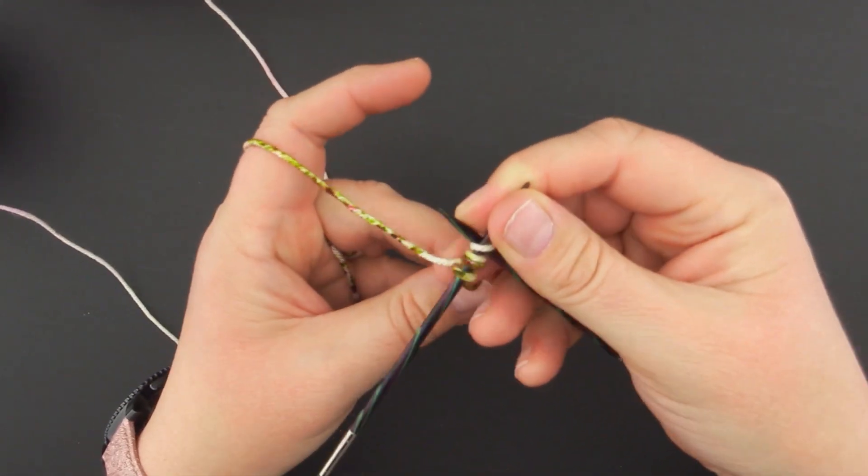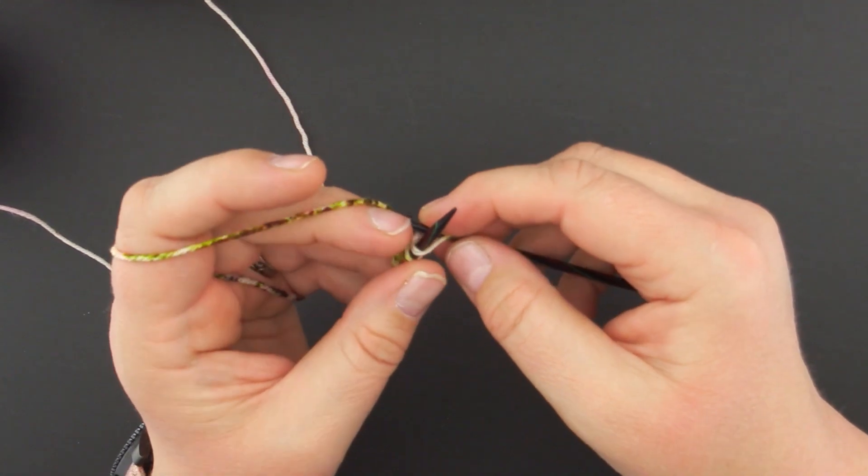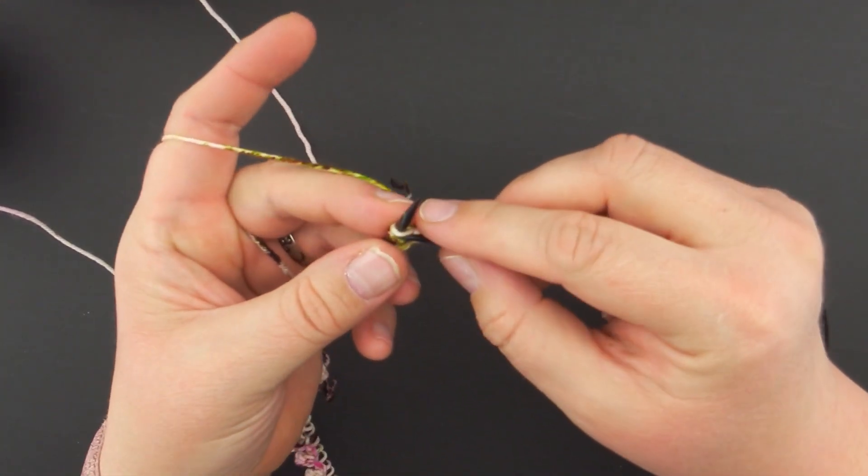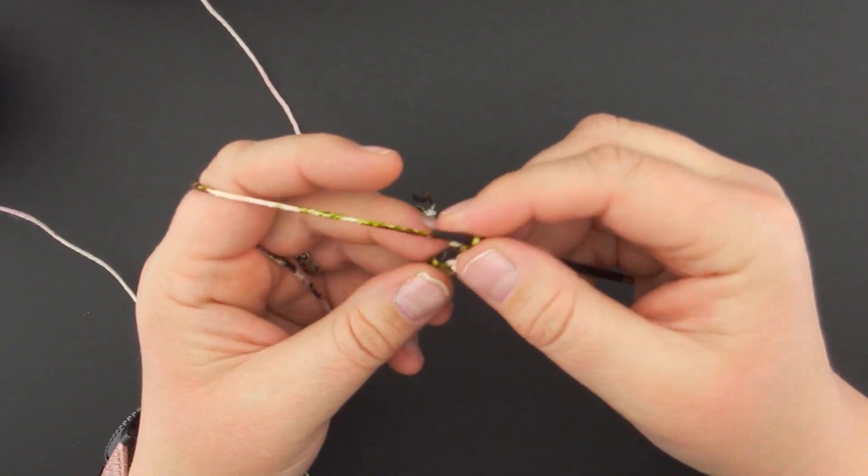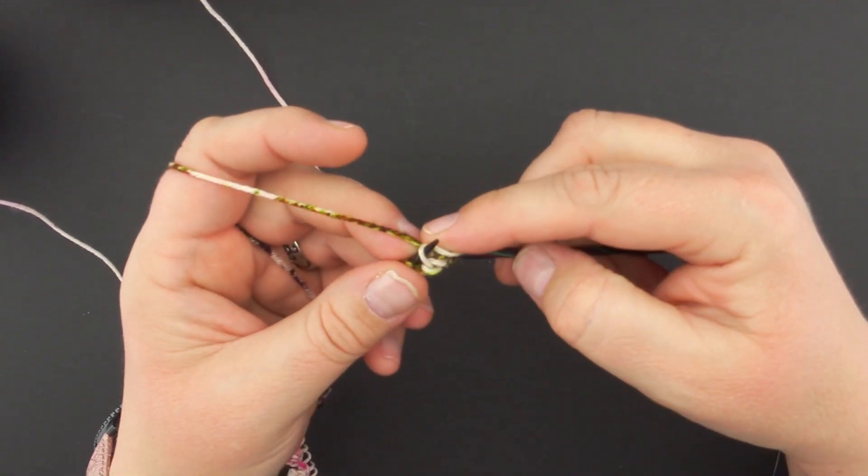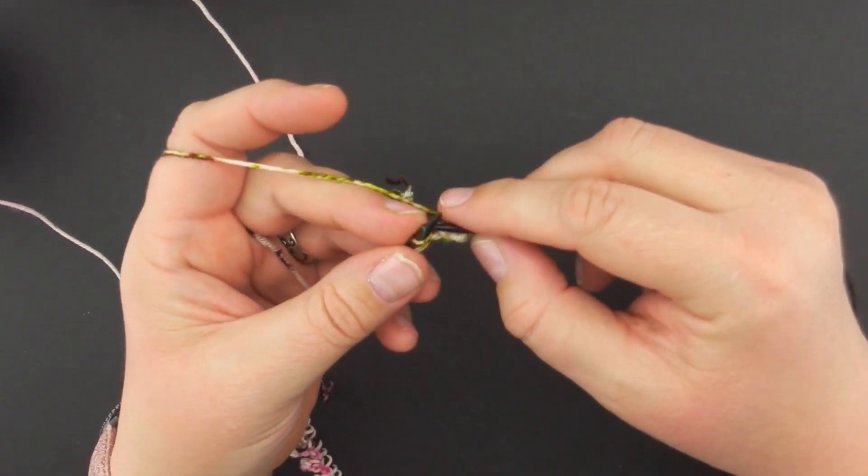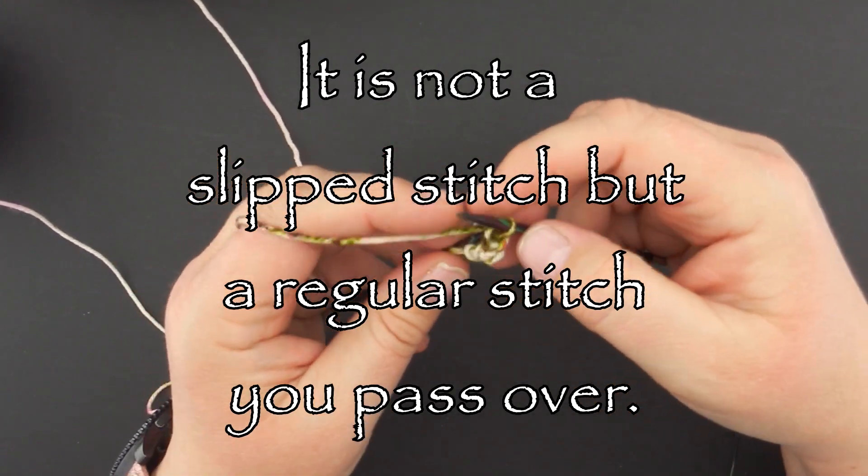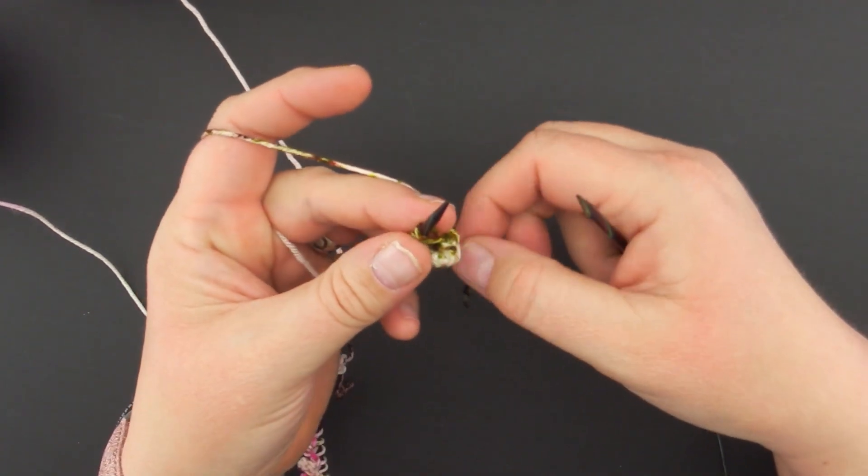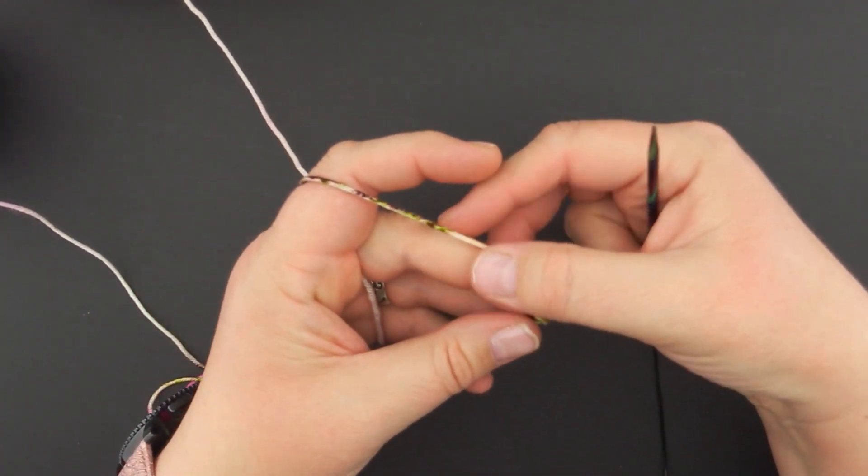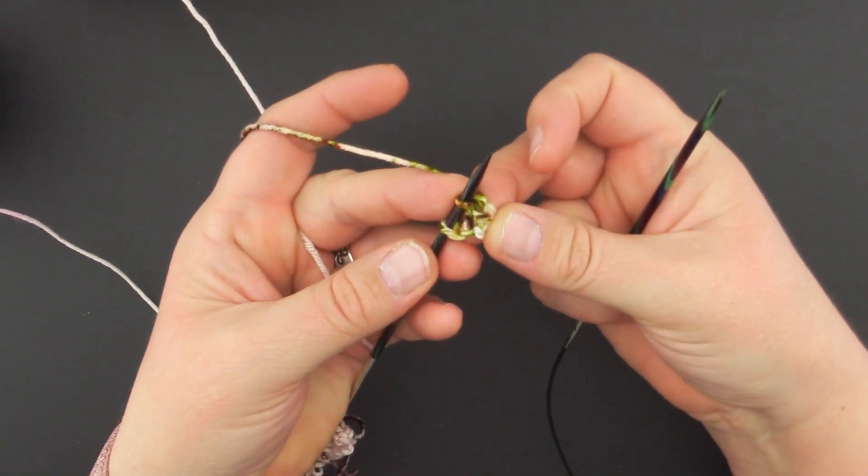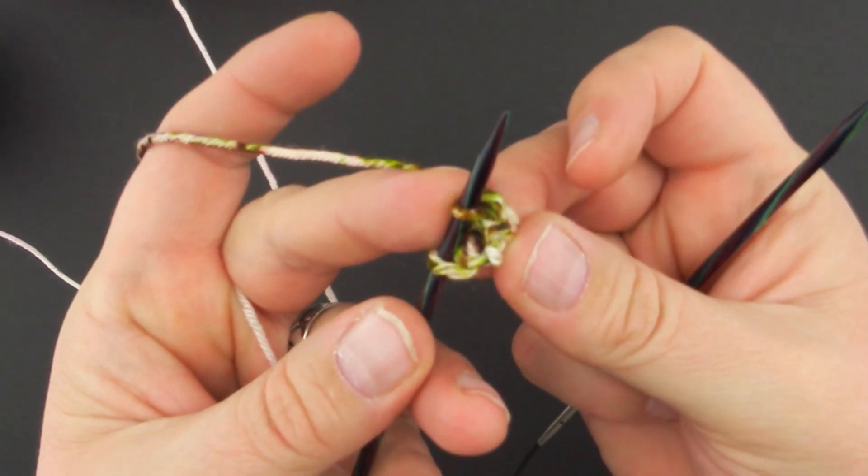Now that I have four stitches on my needle, I'm going to go ahead and bind off two with just the simple basic bind off, where I pass the slip stitch over. That was my first one, this is my second one, and now I have two stitches on my needle and one picot.